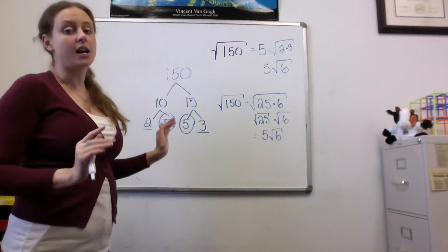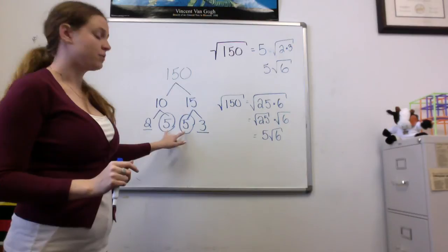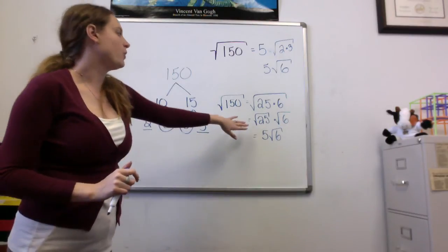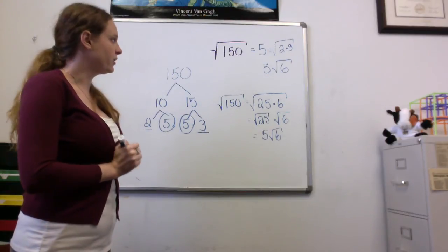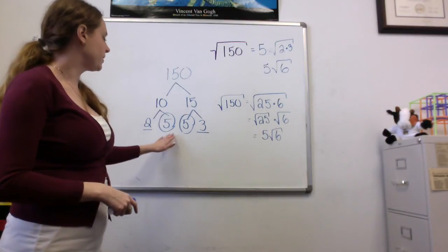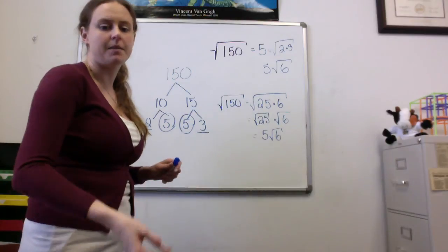The little sock method finds the perfect squares for us if we can't. Or if we already know the perfect square, then we don't have to worry about making the factor tree. It'll go a little bit quicker. But if you don't know what your perfect square is, you can always do my sock method.